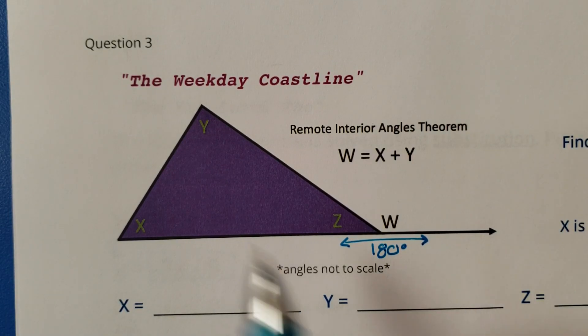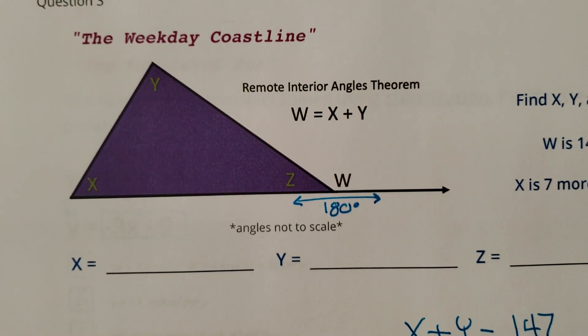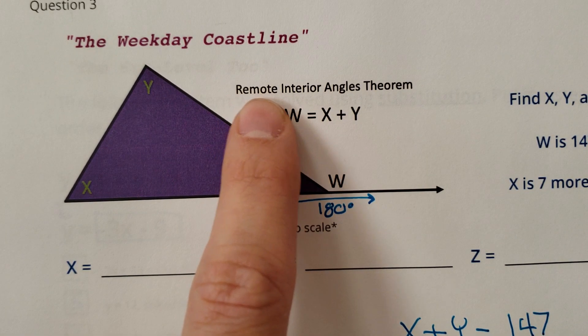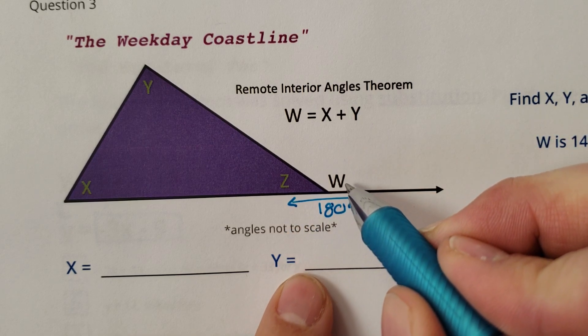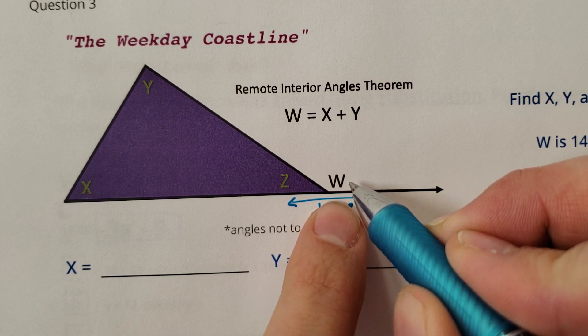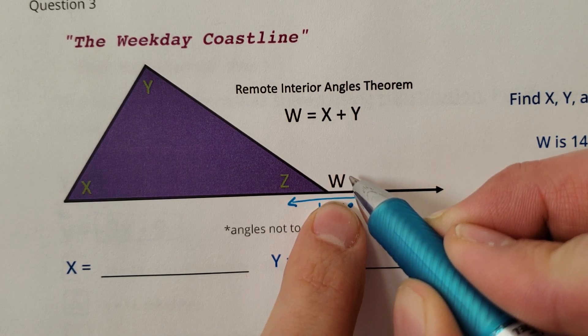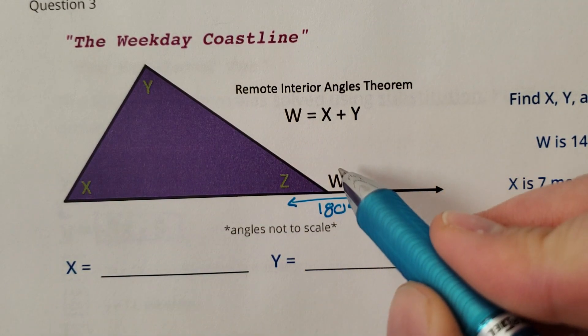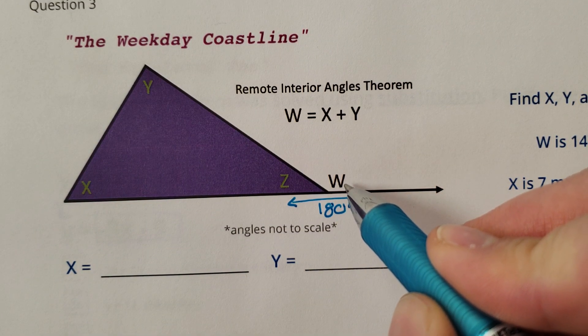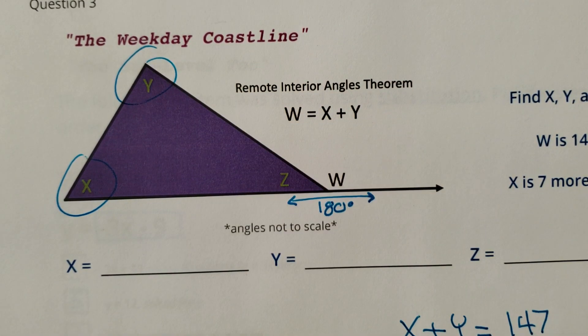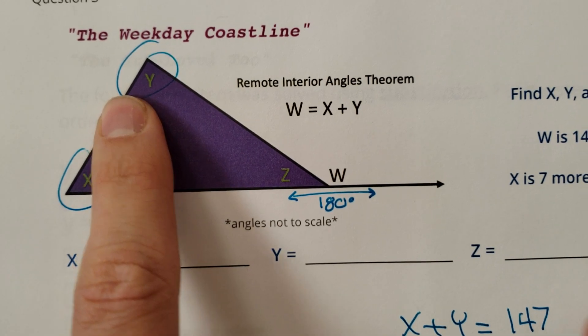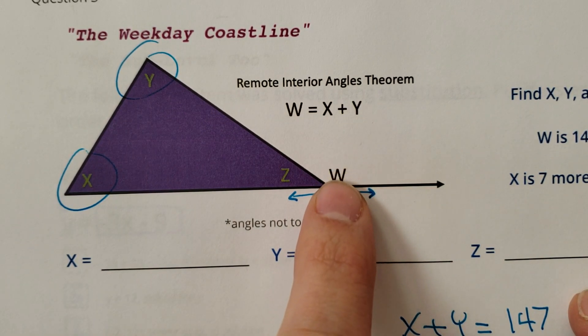Hey students, let's do the Weekday Coastline. There's this thing called Remote Interior Angles Theorem where this exterior angle W, this angle on the outside of the triangle, is actually equal to angle X plus angle Y. So X and Y added together actually equal W.